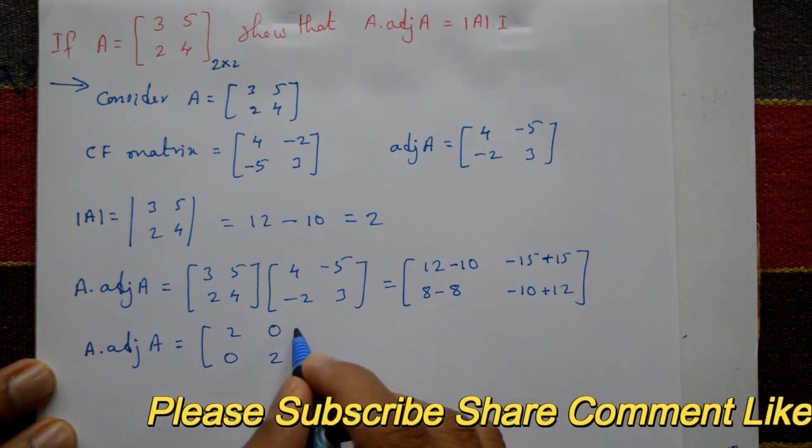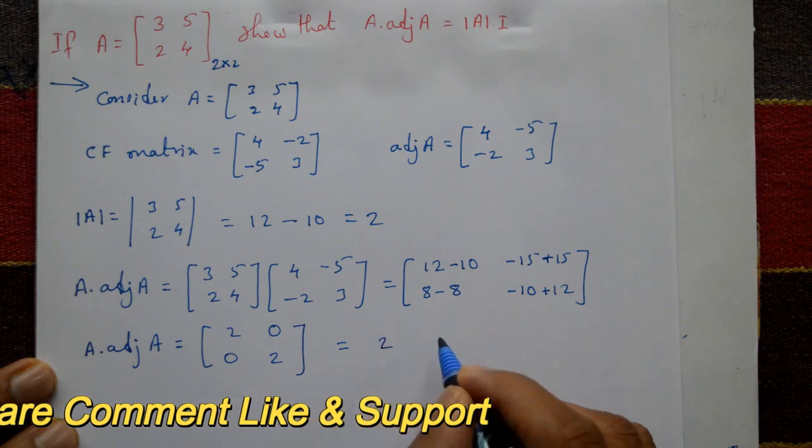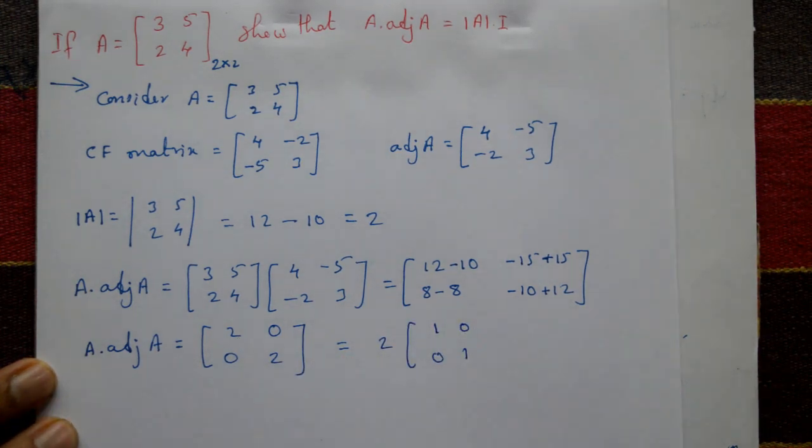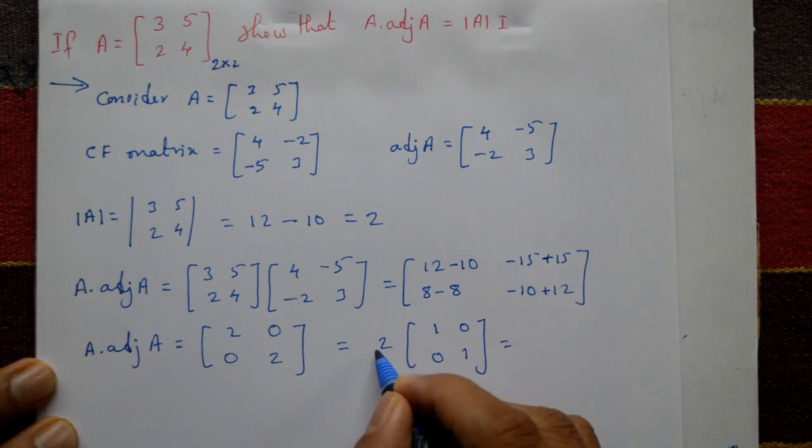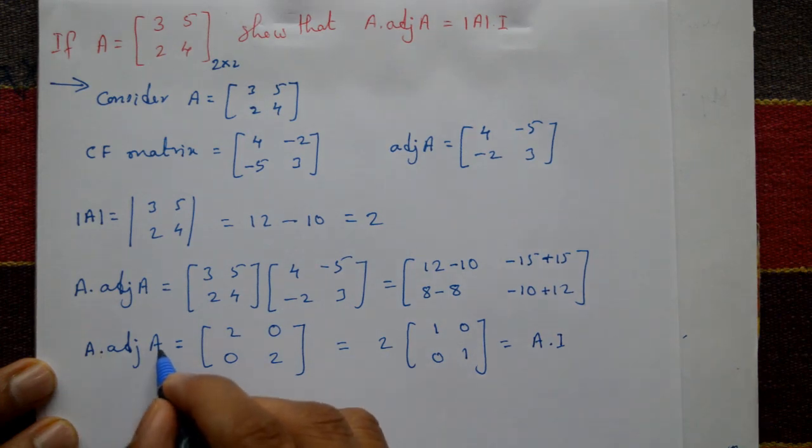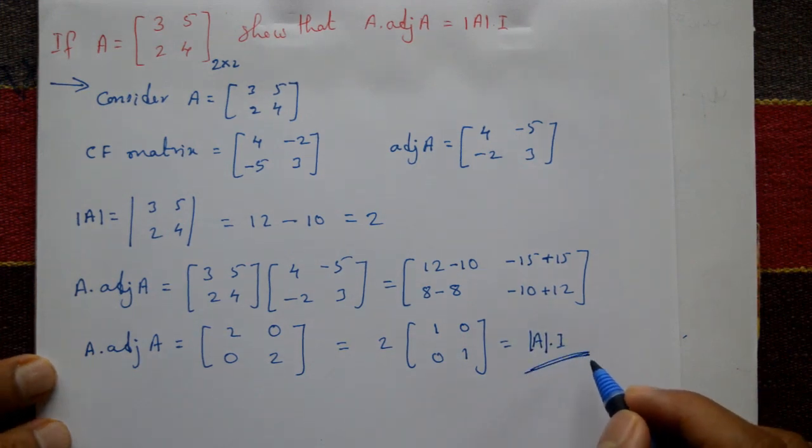A·adj(A) is equal to, now see this is 2 and this is 0 and this one is 0 and this is 2. Take 2 outside, inside is 1 0 0 1. Now see that this 2 is determinant of A and this is unit matrix. A into adjoint of A is equal to determinant of A into I. This is the required solution.